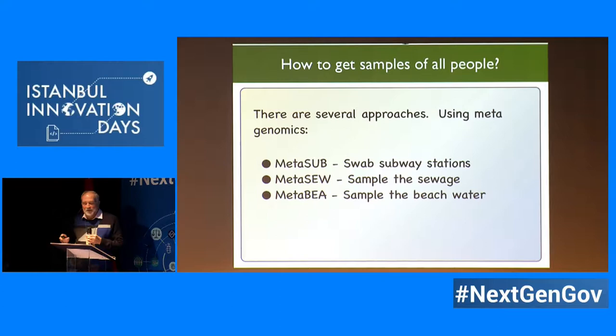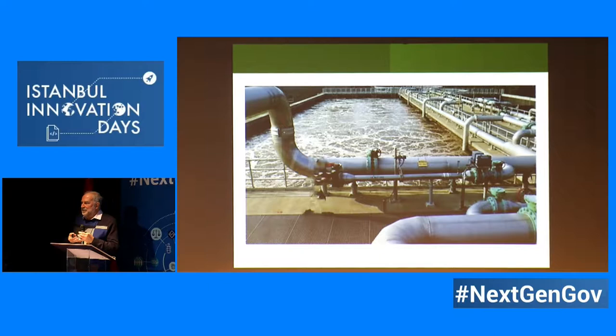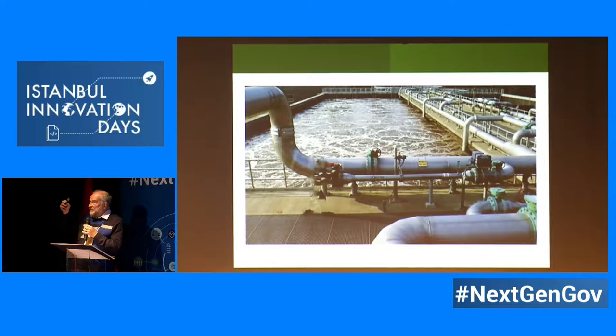We also sample the sewage. The sewage is a fantastic way of collecting samples from everybody — you all go to the toilet at some point, and that goes into a central place. The treating plants are fantastic mechanisms for making an average of the entire population. And because microbes are very small, even something appearing one in a million can still be detected in the sewage.